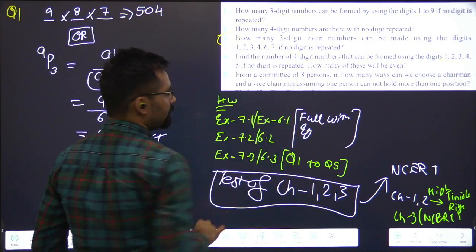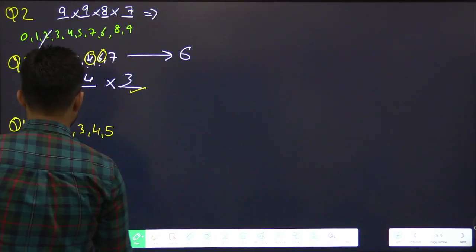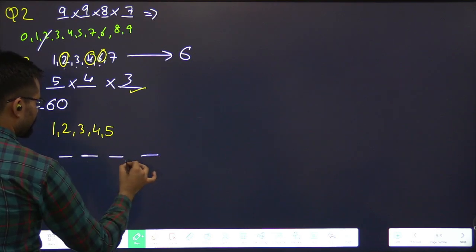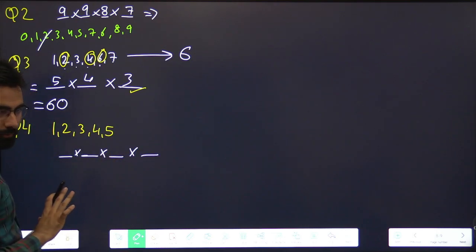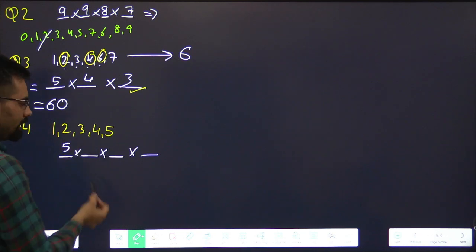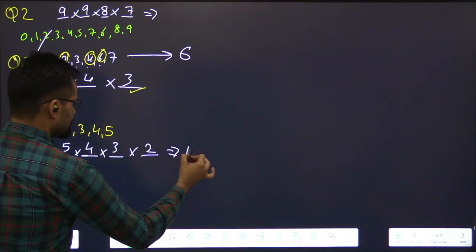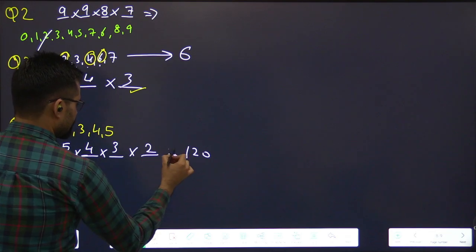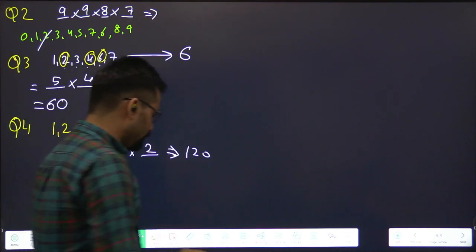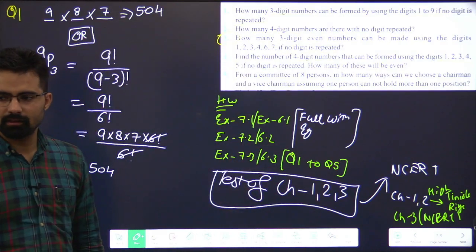What's the specialty? If no digit is repeated, meaning no digit should repeat. 1, 2, 3, 4. In the digits case, this is the best option I'm telling you. The digit should not repeat. What will happen? Tell me? For first? For first 5, next 4, next 3, next 2. So 5×4×3×2.